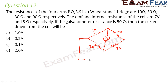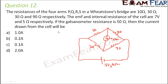We connect the circuit to a cell with EMF 7 volts and internal resistance 5 ohms. The galvanometer has a resistance of 50 ohms. To find the current drawn from the cell, we first calculate the equivalent resistance of the circuit. Looking at the Wheatstone bridge, P by Q is 10 by 30, and R by S is 30 by 90 — both equal to 1 by 3.